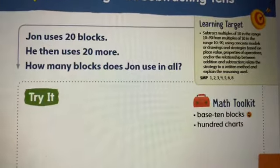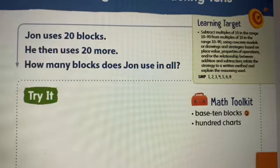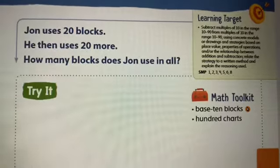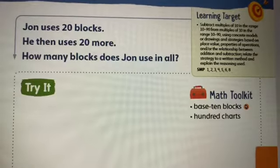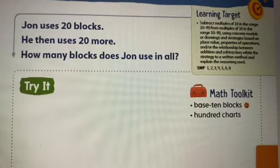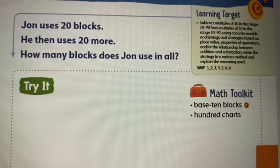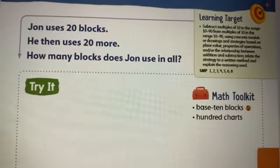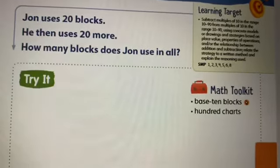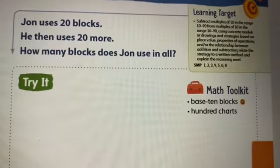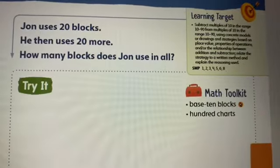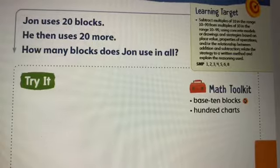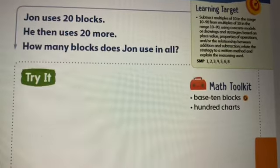So if you look at this problem it says John uses 20 blocks then he uses 20 more. How many blocks does John have in all? So I'll read it two more times for you. John uses 20 blocks. He uses 20 more. How many blocks does John use in all? So in all, when we see it says how many blocks does John use in all, in all is telling us that we need to add them together.